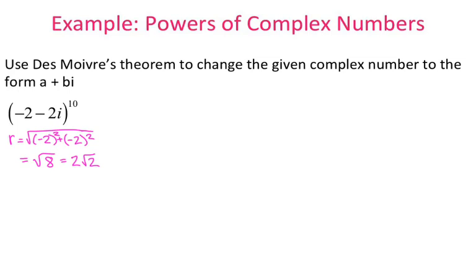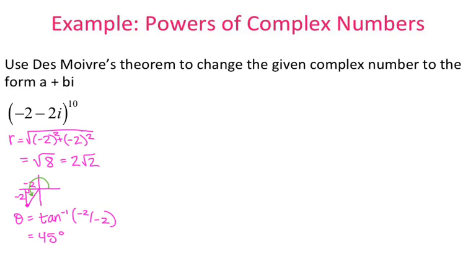To find theta, I need to graph my complex number, because theta depends on the quadrant you're in. Negative 2 minus 2i is the same as graphing negative 2, negative 2, which puts me in the third quadrant. I'll use inverse tangent since I have my opposite and adjacent sides. Inverse tangent of 1 gives me 45 degrees. But we always want the angle in standard position — from your positive x-axis — so the actual angle is 225 degrees.